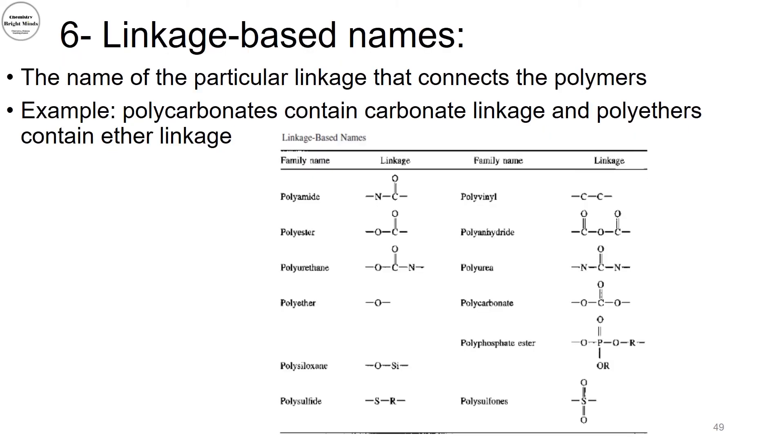Now the last way of naming polymers will be according to the linkage-based name. The linkage that links my monomers to form the polymers, I would name my polymer according to that. So it will be just like the family name of my polymers. It doesn't give me indication of which monomer I'm deriving my polymer from.